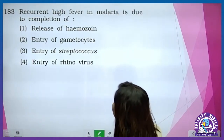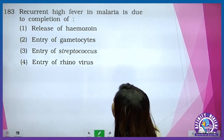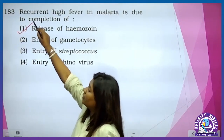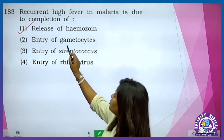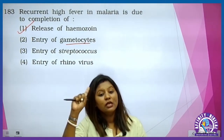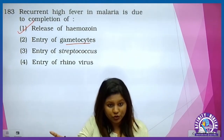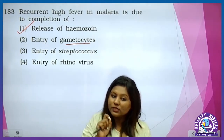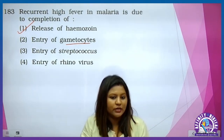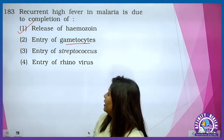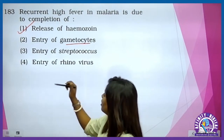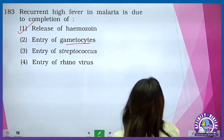Recurrent high fever in malaria is due to the release of hemozoin. Jab RBC rupture hota hai, that causes the release of hemozoin. It is not because of the entry of the gametocyte — entry of gametocyte mosquito mein hota hai. Not because of streptococcus or rhinovirus. It is option 1.